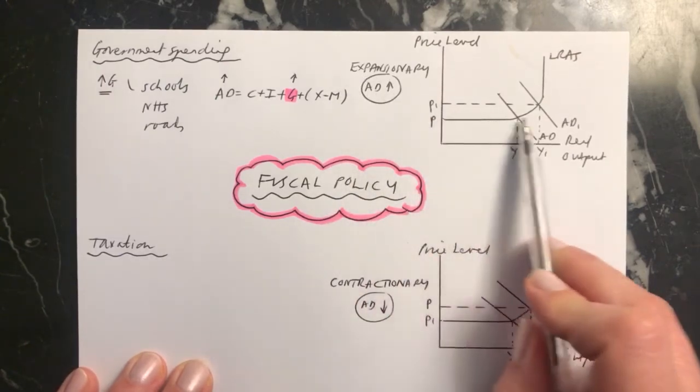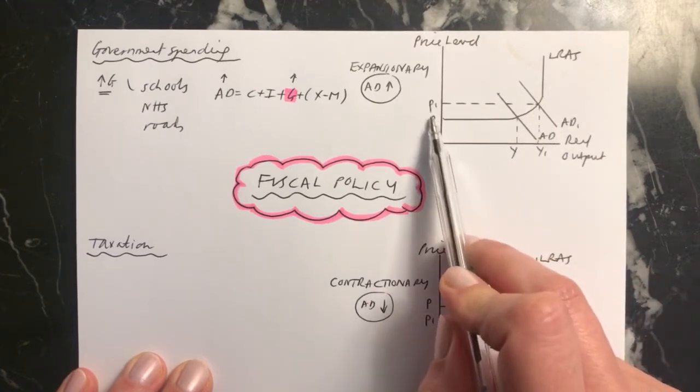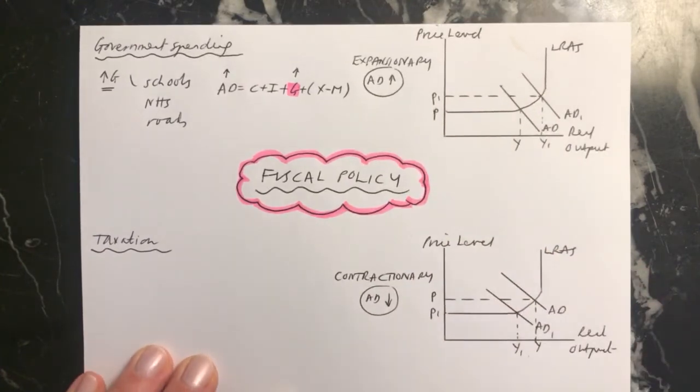And also, in my diagram, because our spare capacity is starting to run out, the price level also increases from P to P1. An alternative,